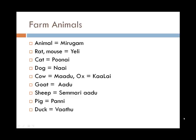General farm animals — actually, animal generally referred to as a wild animal would be mirigam. A rat or a mouse can be referred to as yelly. A cat is punai. Dog is nai. Cow is madu and ox is kalai. A goat is adu. Sheep is semmeri adu. A pig is panni. And a duck is vaatu.